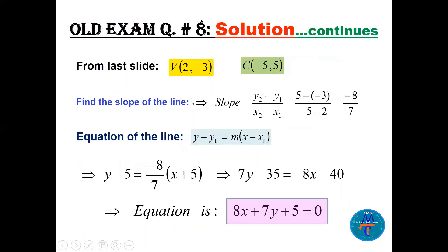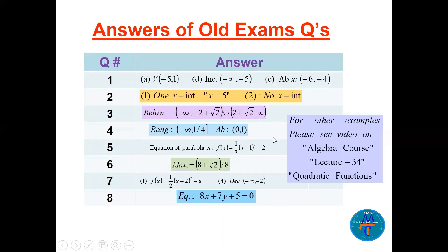Now find the slope between vertex (2, -3) and center (-5, 5): slope = (5 - (-3))/(-5 - 2) = 8/(-7) = -8/7. Using point-slope form with the center: y - 5 = (-8/7)(x + 5). Multiply by 7 and rearrange to get the equation: 8x + 7y + 5 = 0.